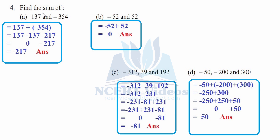Question four: find the sum. Part a: 137 and minus 354. Sum means addition. So 137 plus minus 354 — signs are different, so split 354 in terms of 137: 137 plus 217 makes 354. Now minus 137 and plus 137 cancel, leaving minus 217. The sign was negative so the answer is minus 217.